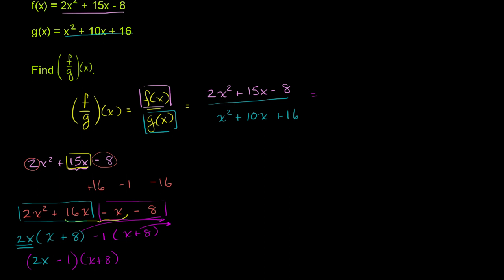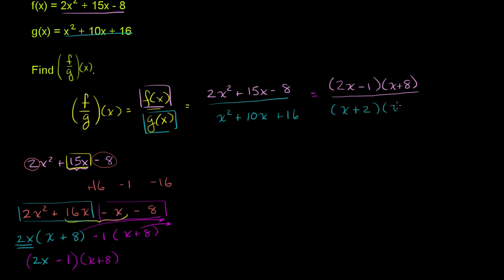Since both groups share x plus 8, we factor that out, leaving 2x minus 1 times x plus 8. So the numerator factors as 2x minus 1 times x plus 8. Now for the denominator — with a leading coefficient of 1, we just need two numbers that multiply to 16 and add to 10: that's 8 and 2. So the denominator factors as x plus 2 times x plus 8.